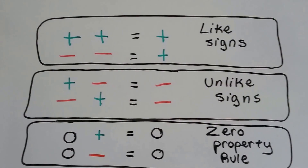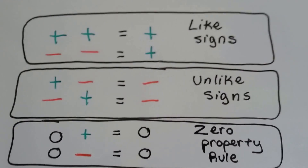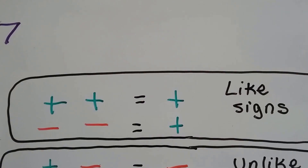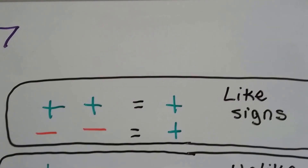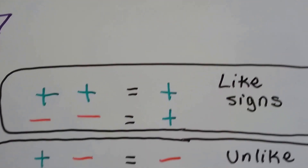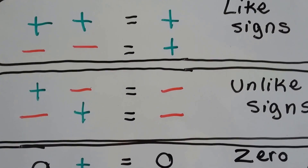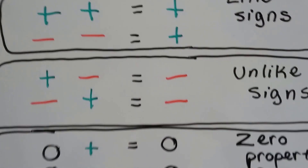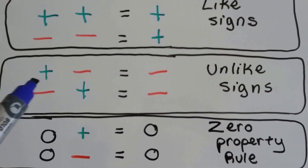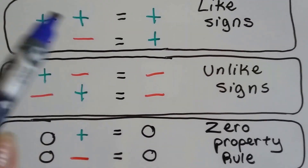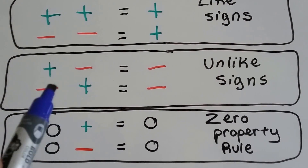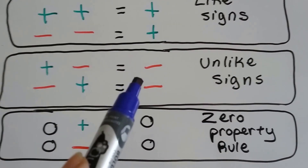We have like signs. When we multiply a positive number with a positive number, we're going to get a positive answer. When we multiply a negative sign with a negative sign, those are like signs, so our answer is still going to be positive. When we multiply a positive and a negative, or a negative and a positive, these are unlike signs — the signs are not the same as each other. Our answer is always going to be negative.